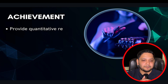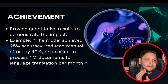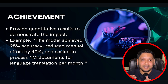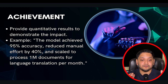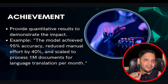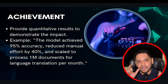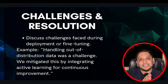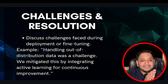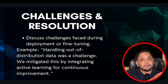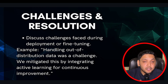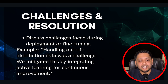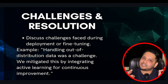You must mention measurable outcomes. For example: my model achieved 95% accuracy, reducing manual effort by 40% and scaling to process 1 million documents for language translation. These quantifiable numbers convey concrete impact. You should also discuss challenges faced during deployment, fine-tuning, or any other part of your project. For example: handling out-of-distribution data was a challenge, and we mitigated this by integrating active learning for continuous improvement.